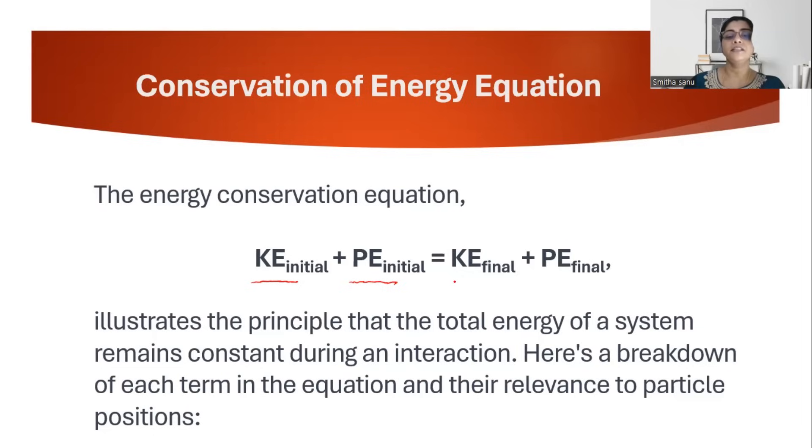Final kinetic energy is after the interaction with the nucleus, as it reaches the distance of closest approach. At the point closest to the nucleus, after the interaction, what is the change in its velocity? That will account for the final kinetic energy. Similarly, what is the change in the final potential energy because of the change in position and configuration with respect to the nucleus?